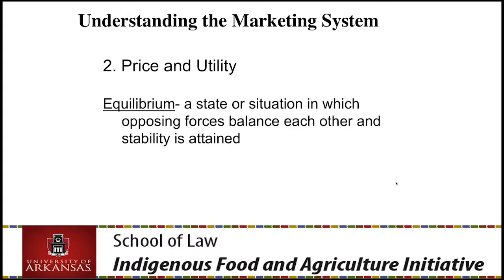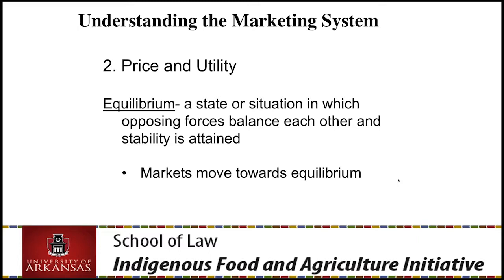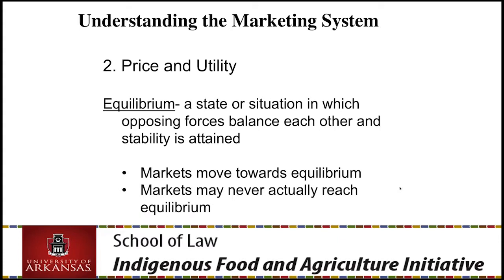Equilibrium is a state or situation in which opposing forces balance each other and stability is attained. Markets move toward equilibrium — naturally where supply and demand want to balance. Markets may never actually reach equilibrium due to the individual properties of supply and demand, but they move toward it. You may never find the exact place where the offer price and the bid price are identical and market-clearing, but the market is always moving toward that.